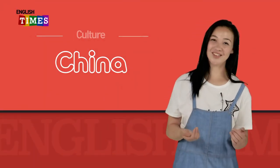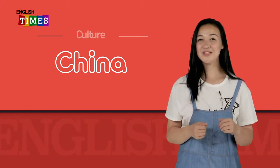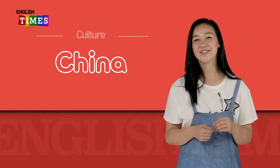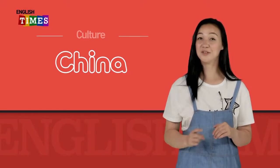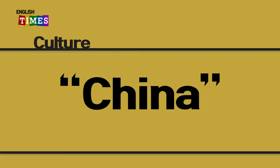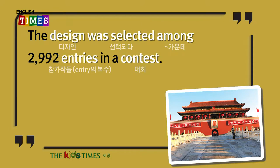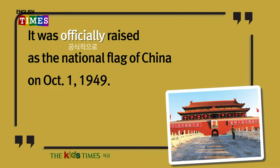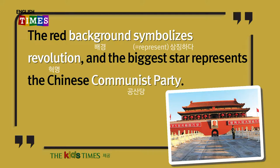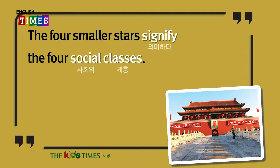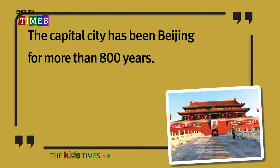Thank you, Dr. John. Have you listened to it? Culture, China. The national flag of China is called the five-star red flag. The design was selected among 2,992 entries in a contest. It was officially raised as the national flag of China on October 1, 1949. The red background symbolizes revolution, and the biggest star represents the Chinese Communist Party. The four smaller stars signify the four social classes. The capital city has been Beijing for more than 800 years.